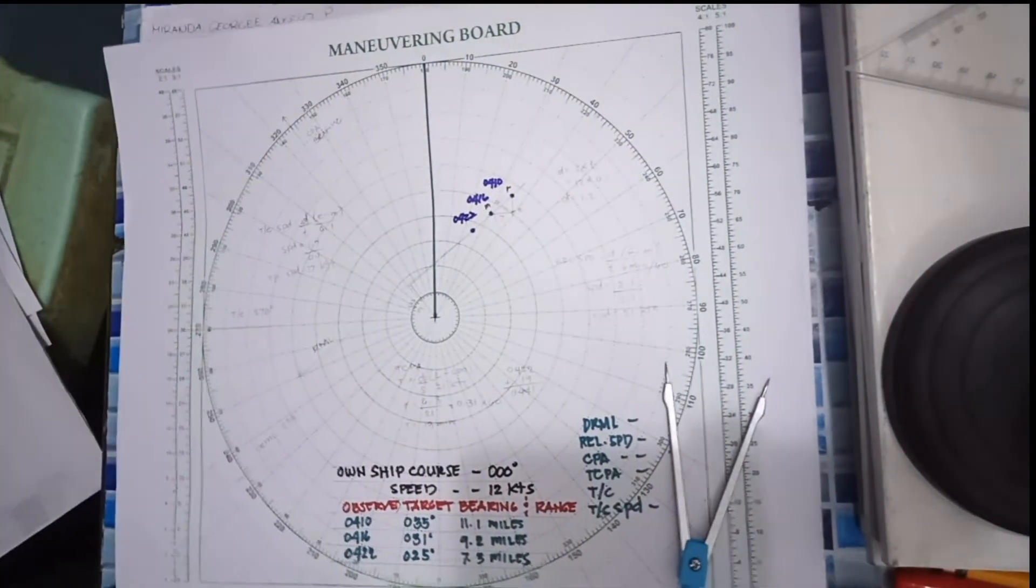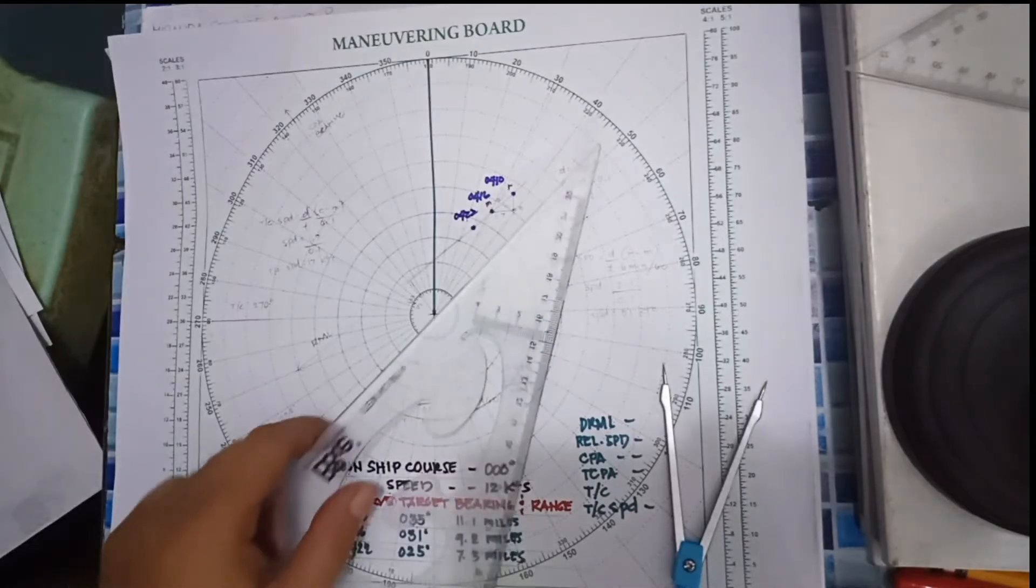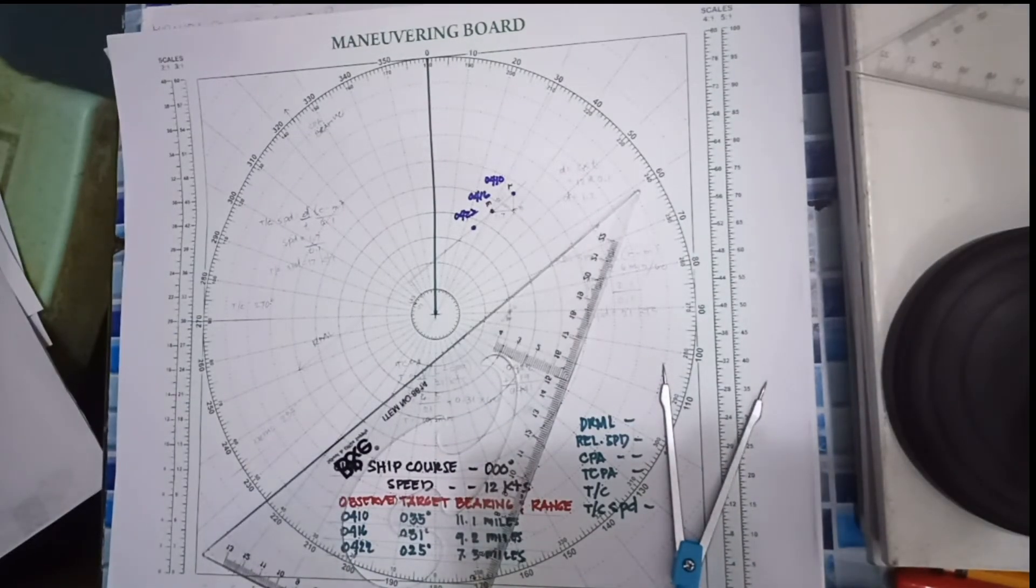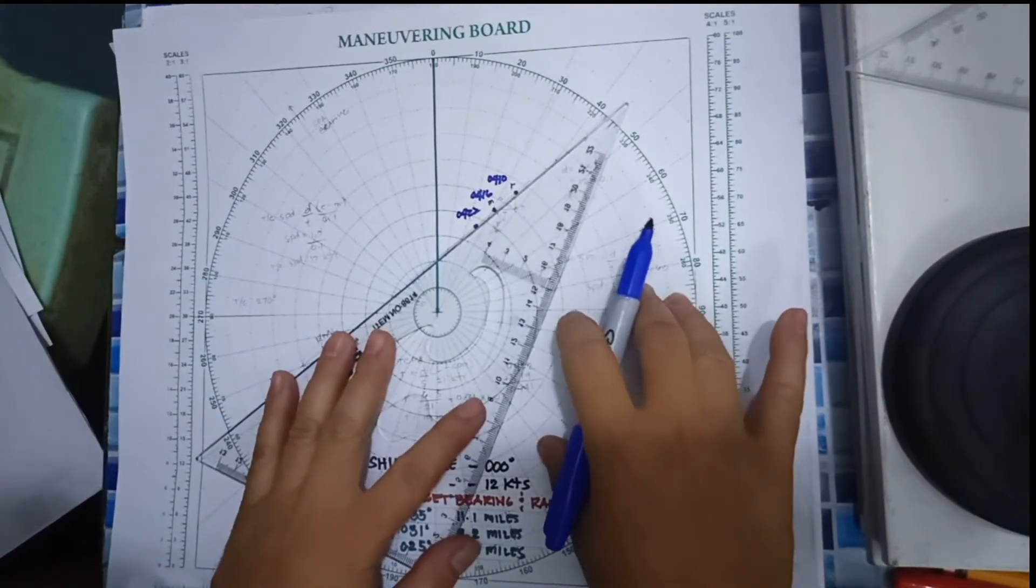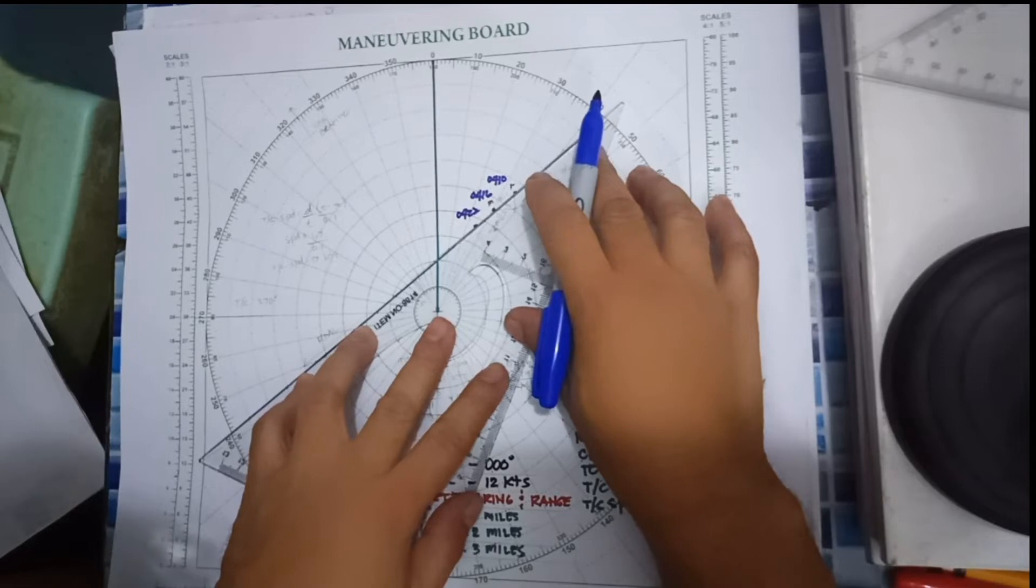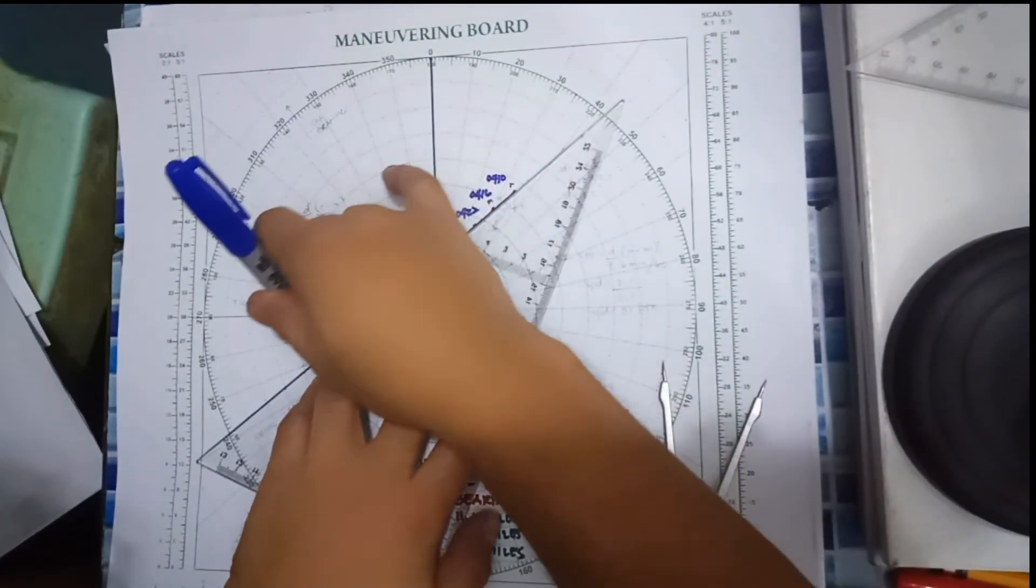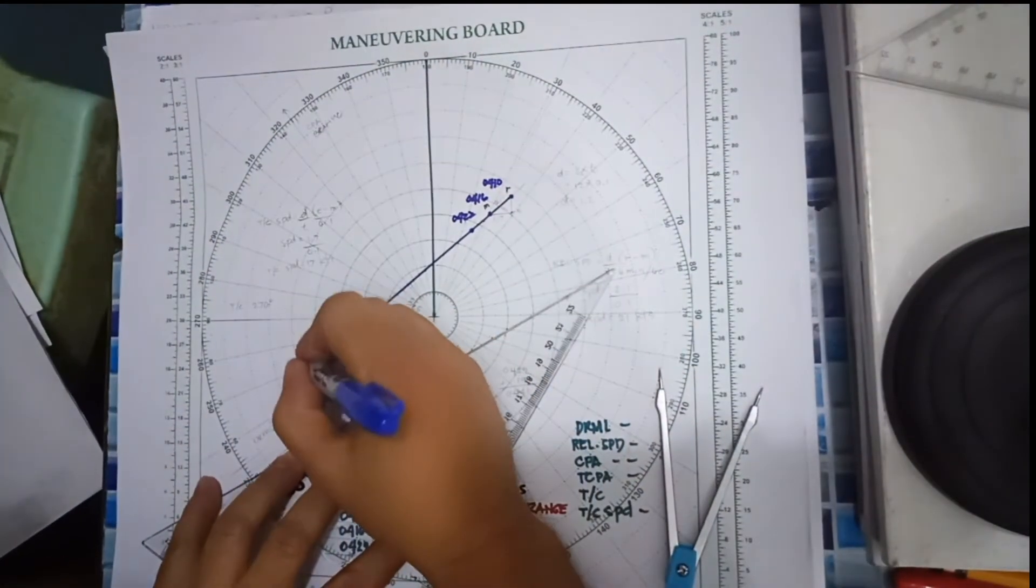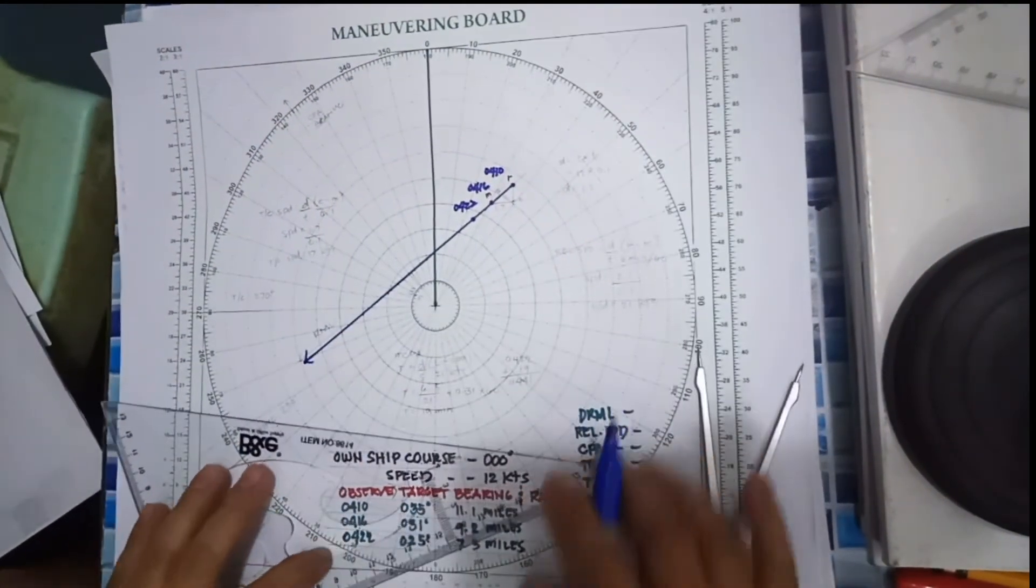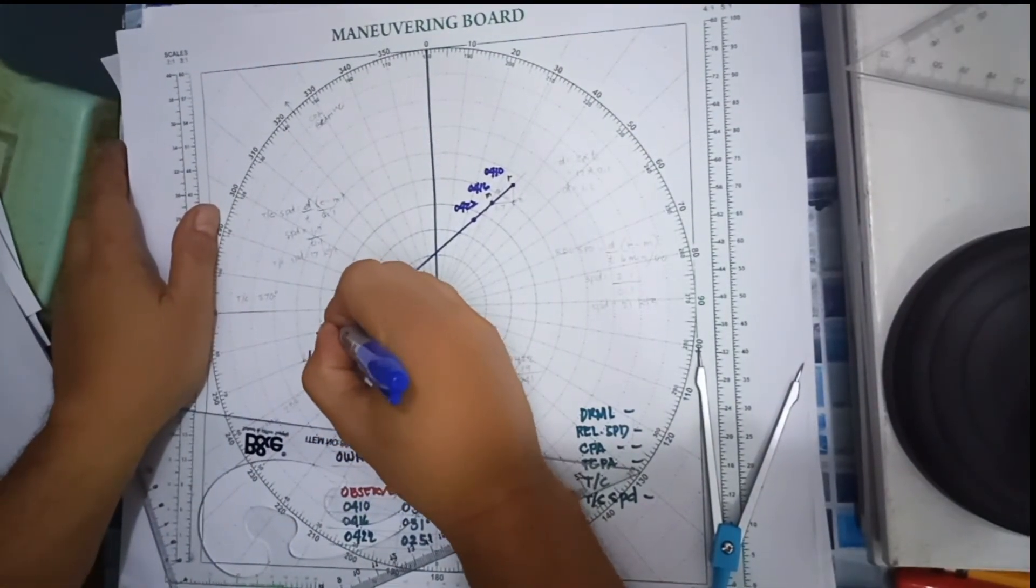After you plot the three observed target bearings and range, you have to connect from the first bearing which is R to the last bearing. So we have to connect now from R, M, then the third bearing. So this line is called the RML.